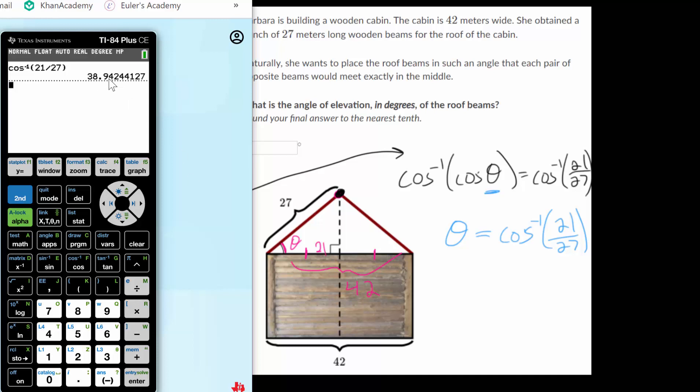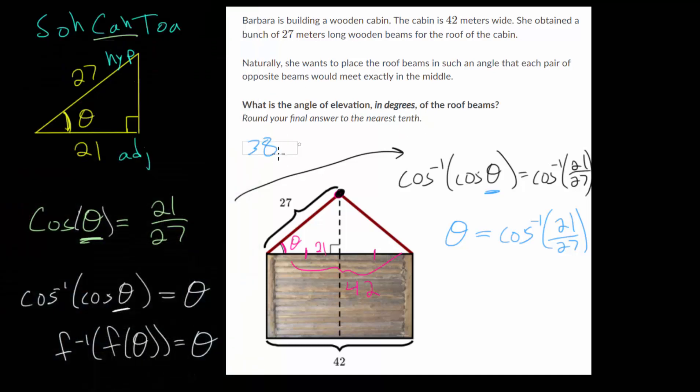And we get 38.94, but we need to go to the 10th, so that's just 38.9, and that's what we put in the box. And again, it's in degrees because it's our missing angle.